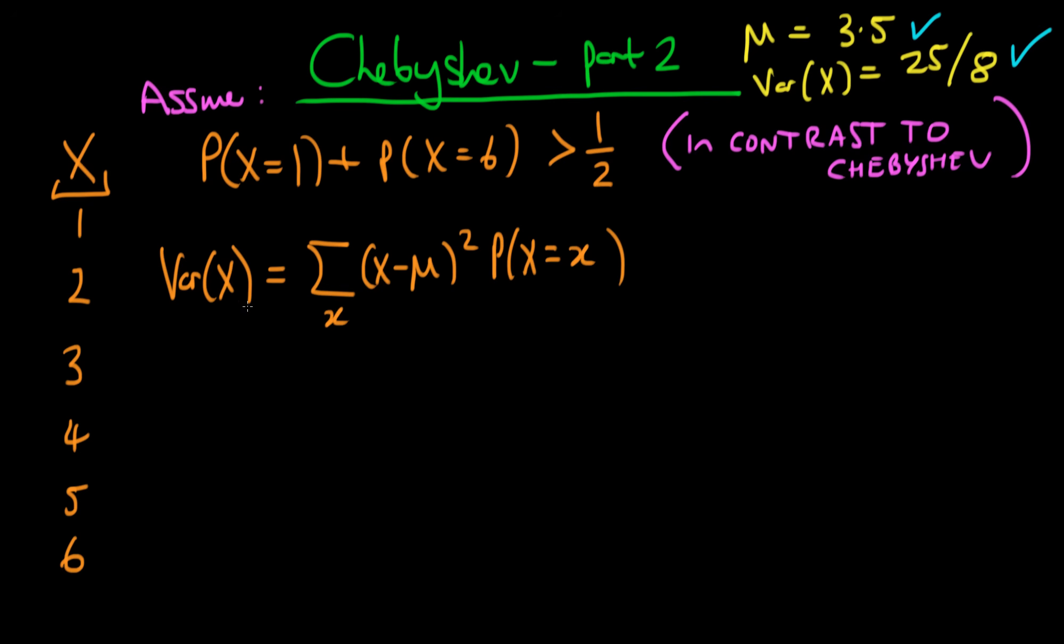We also wrote down what the variance of x was, and sort of implicit here is that the variance of x is equal to the expected value of x minus mu squared, namely the second centered moment. And we wrote it using our rule for finding the expected value of a given function for a discrete random variable as this sum over all x values here.